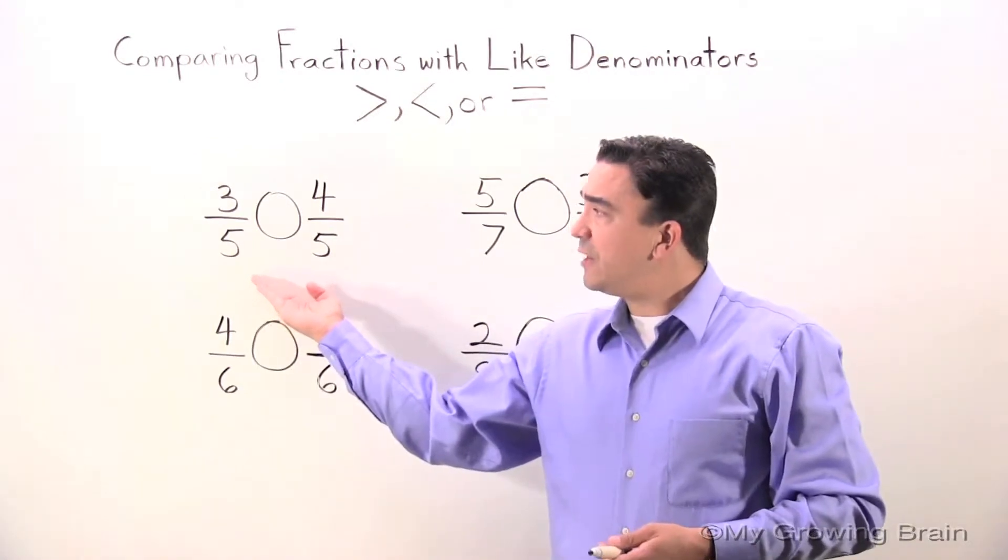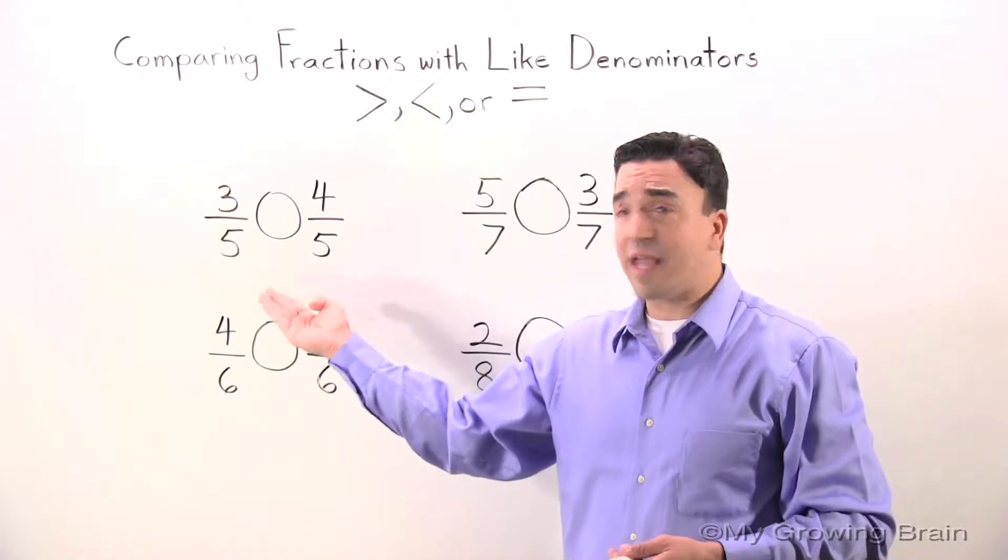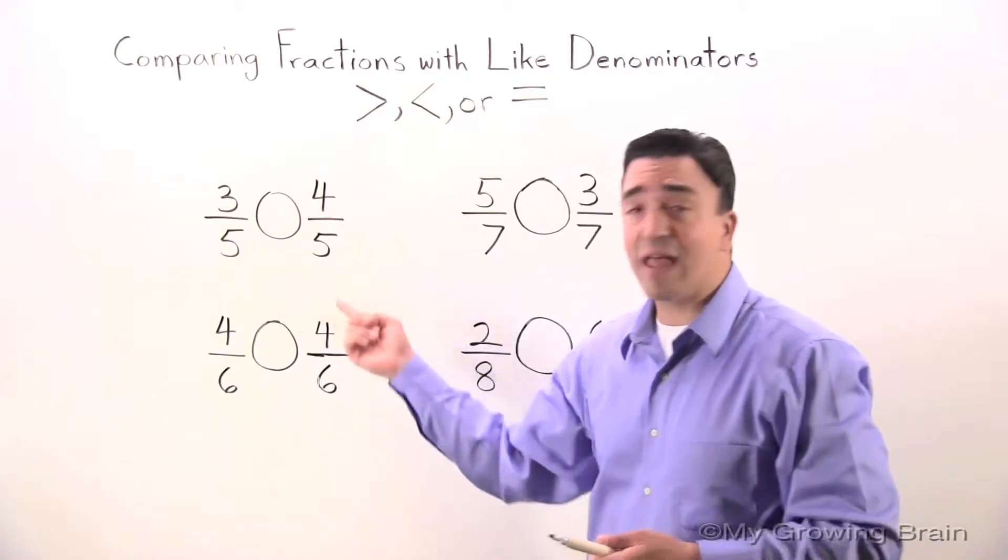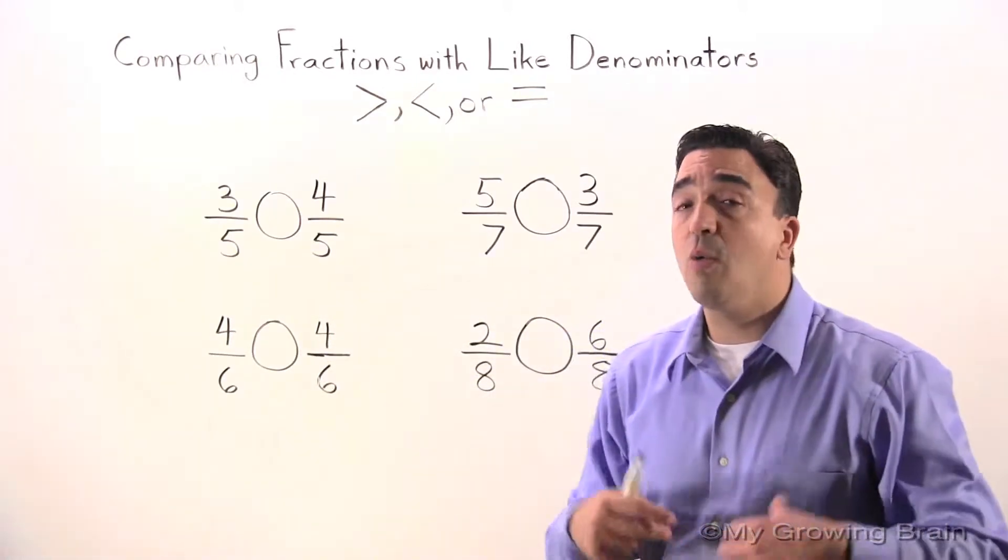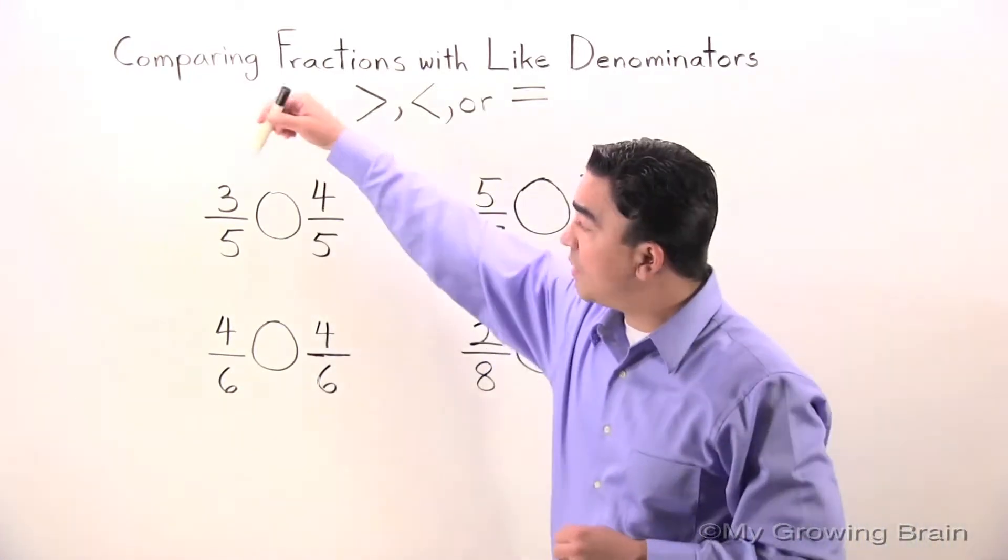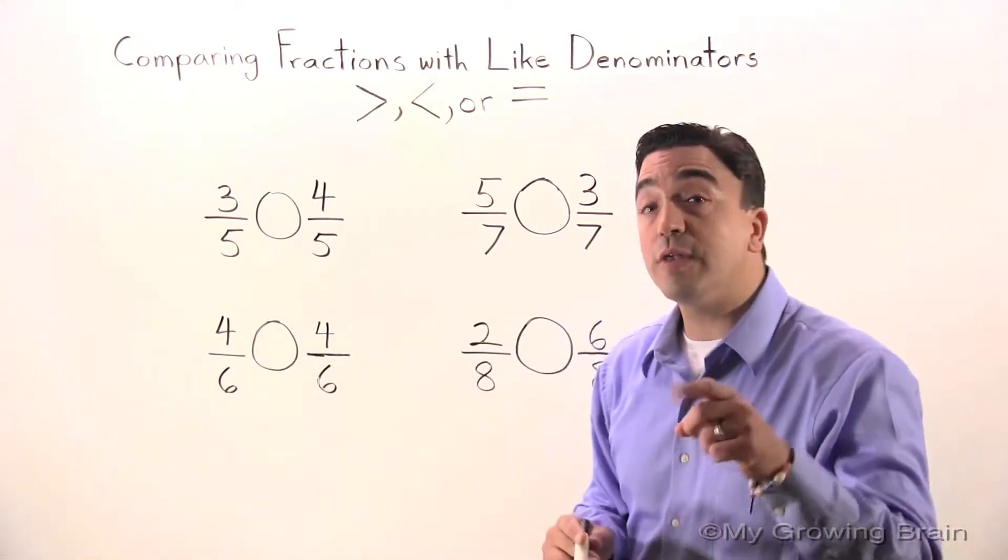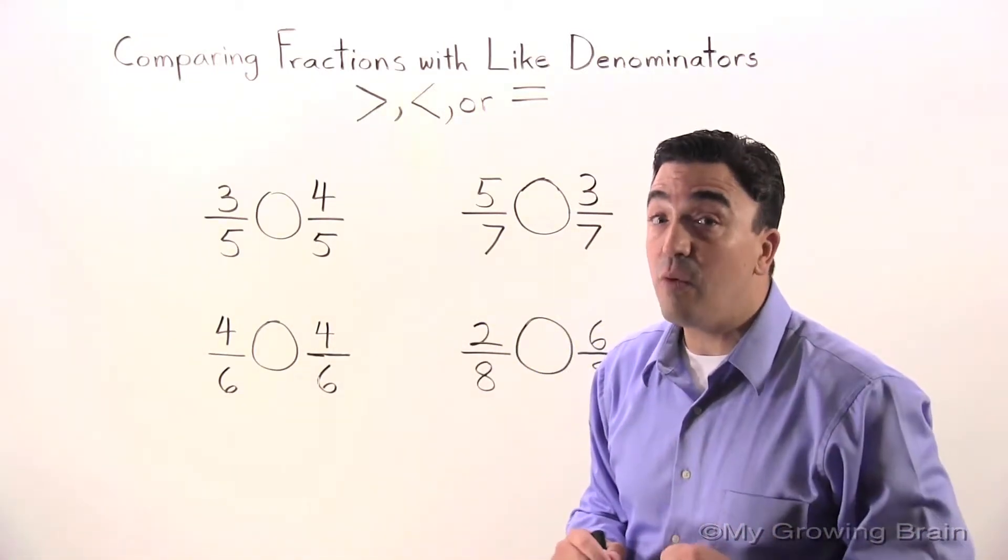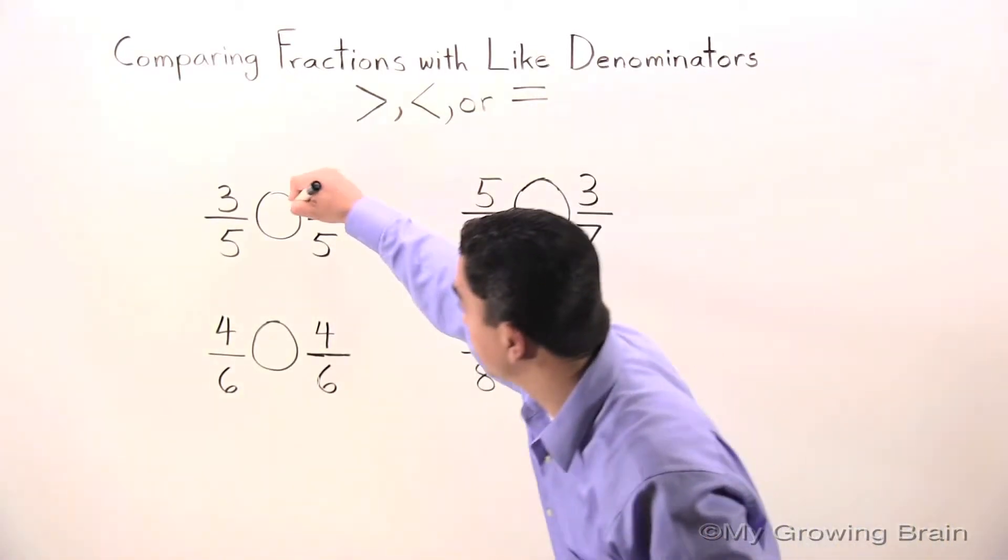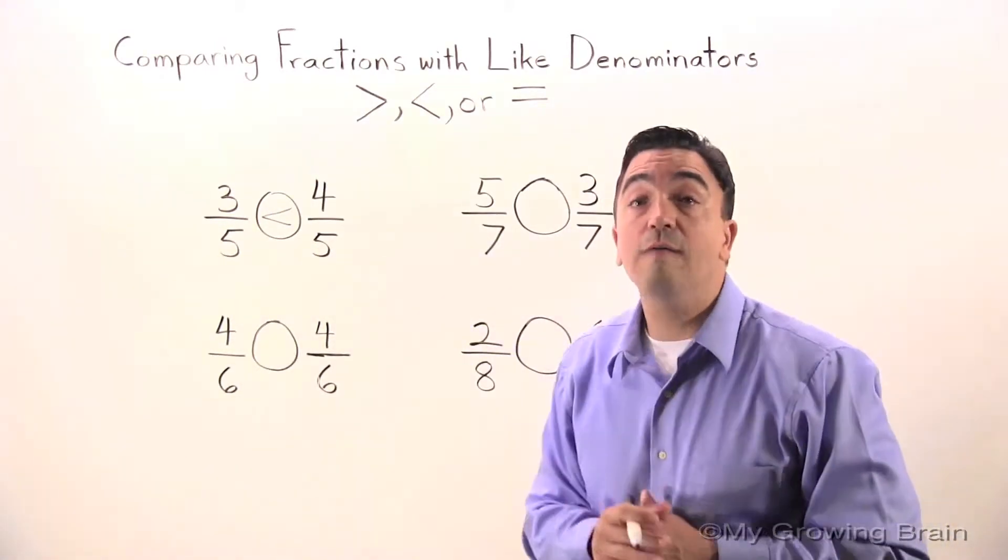We have three-fifths and we have to ask ourselves, is it less than, greater than, or equal to four-fifths? We have like denominators. Therefore we can go straight to the numerators to figure this answer out. We have a numerator of three and a numerator of four. We know that three is less than four. Three-fifths is less than four-fifths.